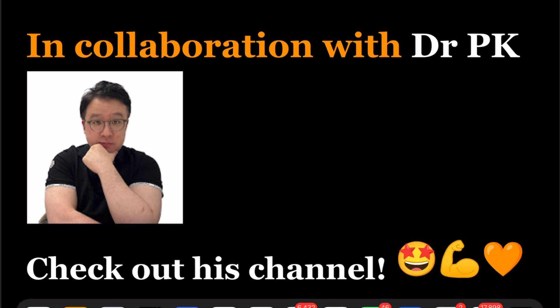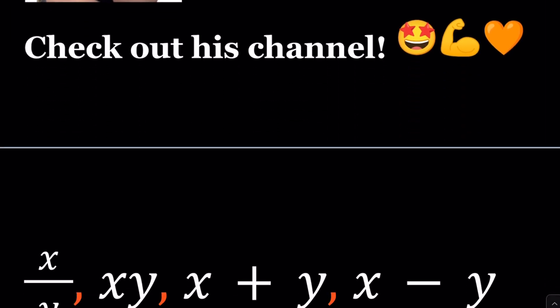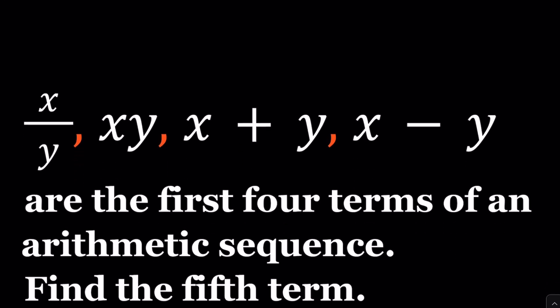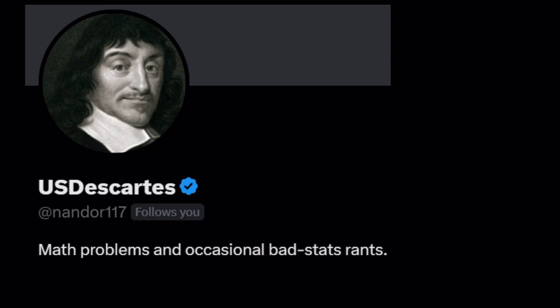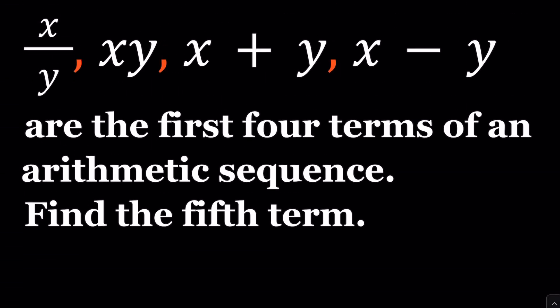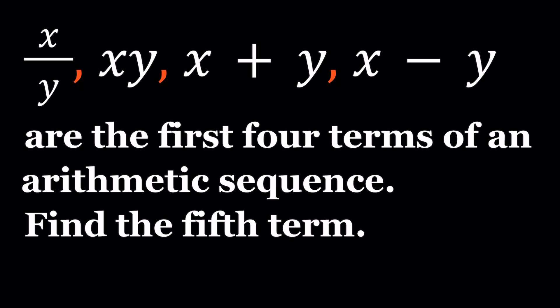This problem was inspired by a problem that was posted on Twitter by Professor Nandor, which is a great teacher. He does math problems, and he provides great solutions on Twitter. I'm going to share the link to his profile as well as the actual problem. The problem is asking for the following. These are the first four terms of an arithmetic sequence, and we're supposed to find the fifth term. Dr. Nandor, thank you for the problem. This is a great problem.